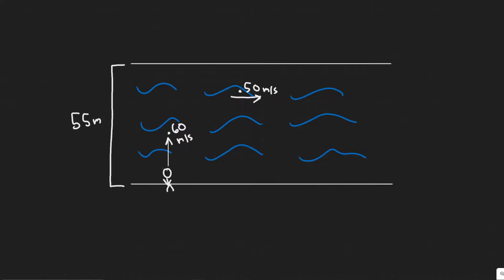Okay so in this problem we're told a swimmer is capable of swimming 0.6 meters per second in still water. If she aims her body directly across a 55 meter wide river whose current is 0.5 meters per second, how far downstream from a point opposite her starting point will she land and how long will it take her to reach the other side?